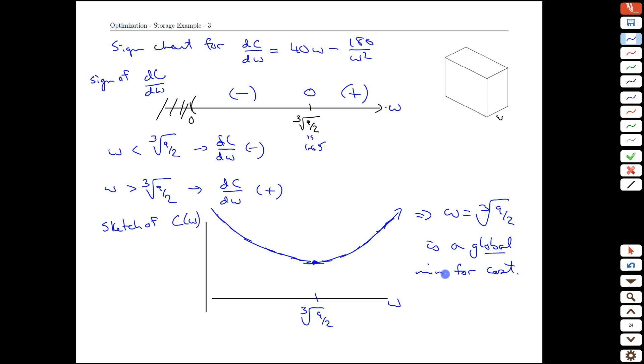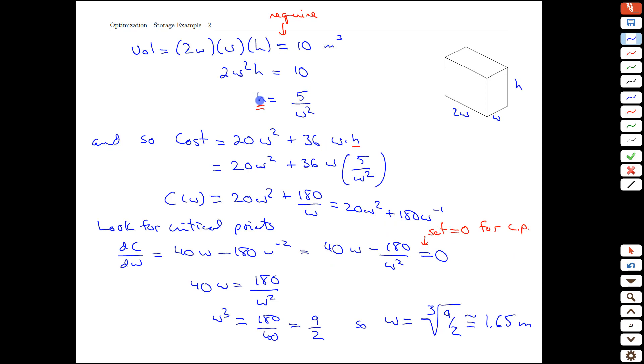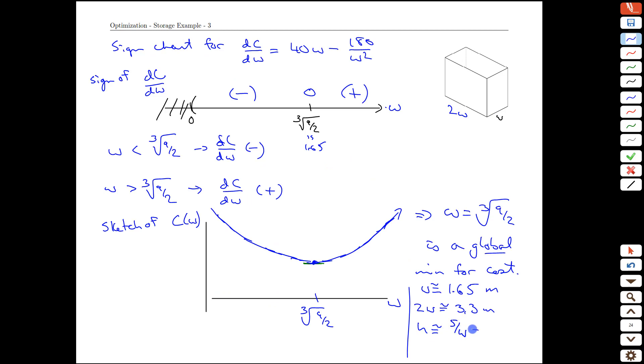Perfect. That gives us the rationale and now the only thing that remains to be done is to say, well, what is that cost and what are the dimensions? So the final result here, we'd have w equals around 1.65. The other side was two w's. That would be around 3.3 meters. The height would be approximately, we can't see it on this page, but if we go back a page, the height is going to be 5 divided by w squared, 5 over w squared, which is approximately 1.8 meters.